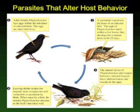The acanthocephalon again changes the behavior of the isopod when it's ready to be transferred to its primary host, the starling. It causes the isopod to move out into lighter-colored areas and then the starling can pick it off, so the acanthocephalon gets into its primary host.